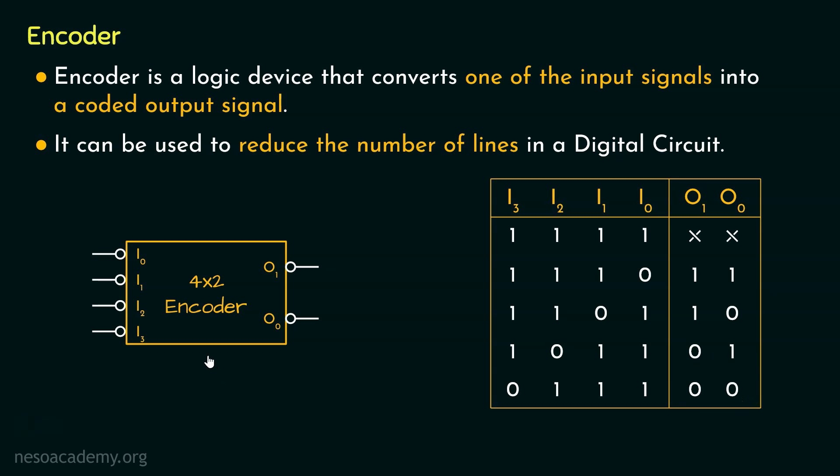Also, with the help of the encoder, the number of input lines, which was previously 4, can now be represented using only two output lines. Therefore, encoder can reduce the number of lines in a digital circuit. Finally, the name encoder is also justified, because the input lines are now coded.